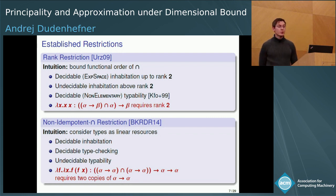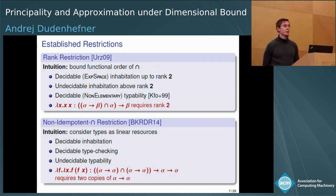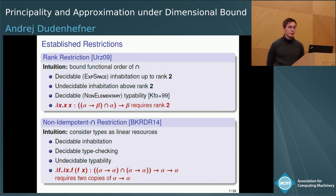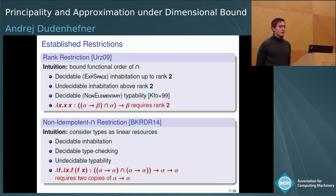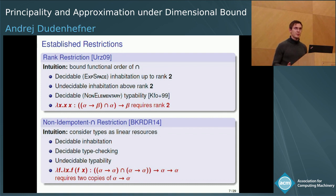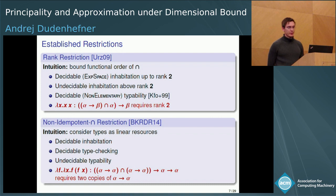For the non-idempotent restriction, you have to put actual copies of your types — types are used as resources. If you want to consume some data two times, then you have to type this piece of data two times. For example, for Church numeral two, if you want to use the function two times then you need to type that function two times by the intersection of (alpha → alpha) ∩ (alpha → alpha). This immediately leads to what was commented during the last talk: typeability becomes undecidable since you need to figure out how often you will use some pieces of code, and such properties usually cannot be decided.